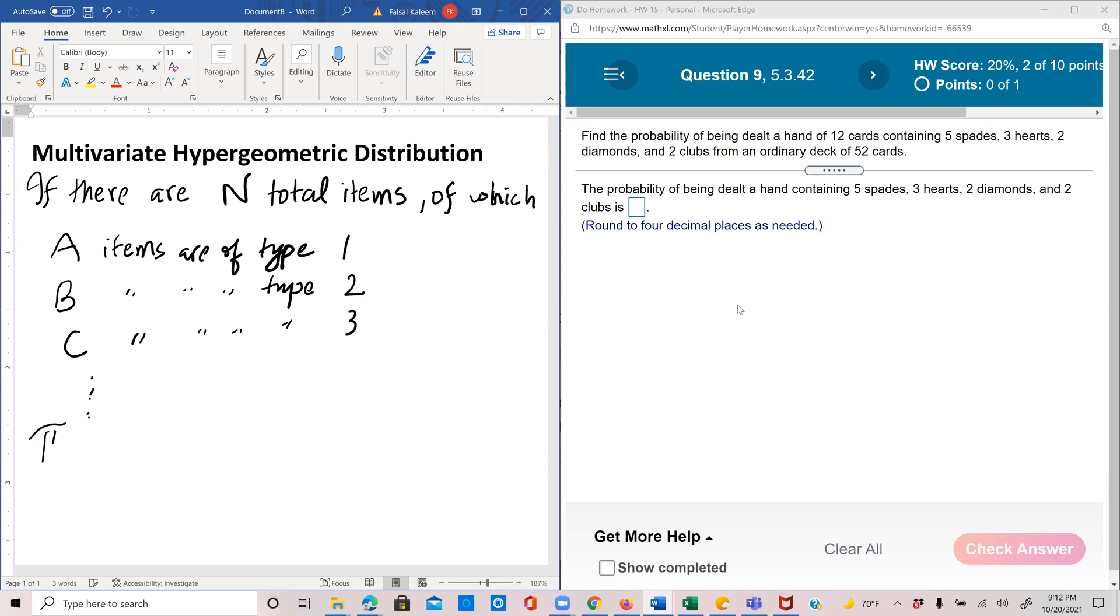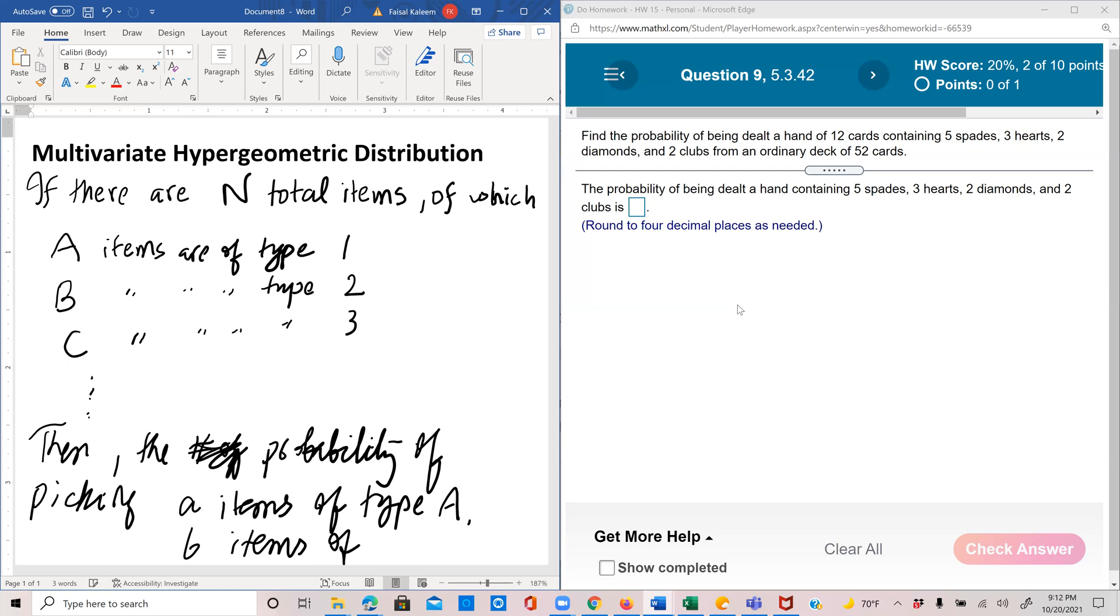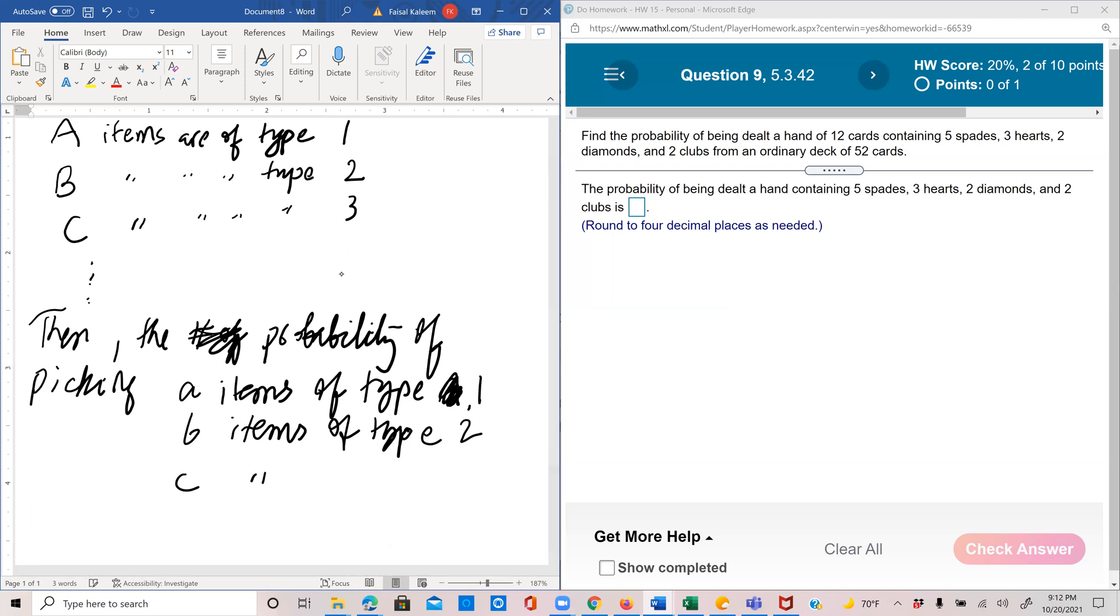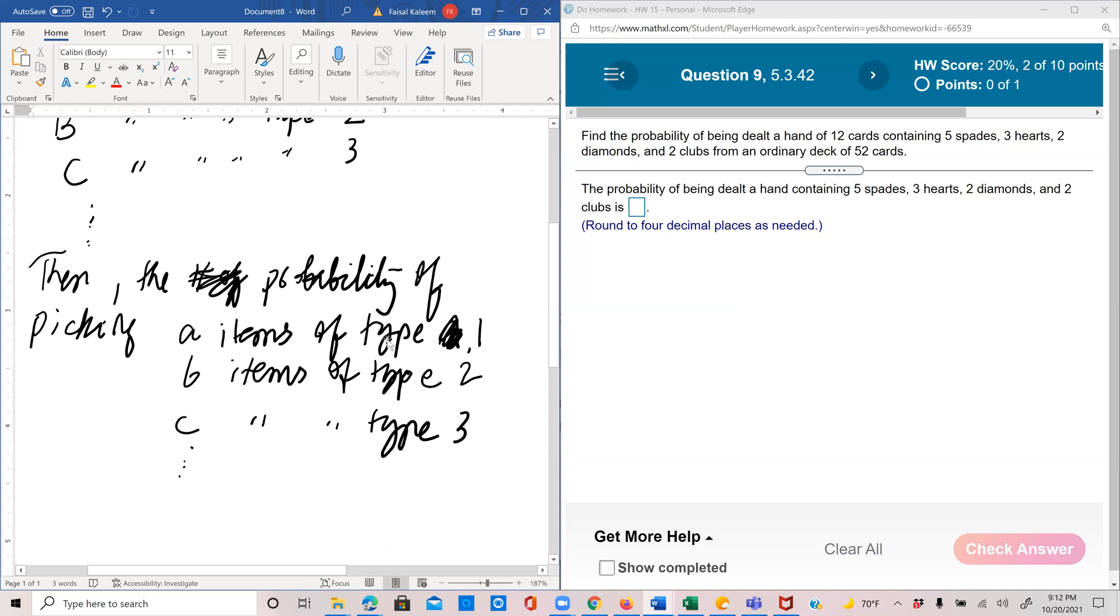Then the number of ways or the probability of picking items of each type and so on is given as: